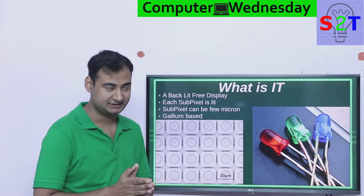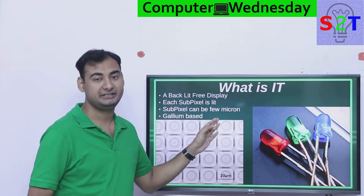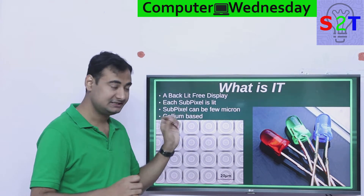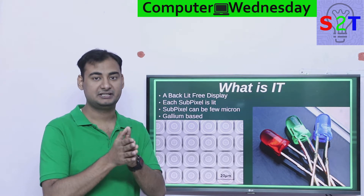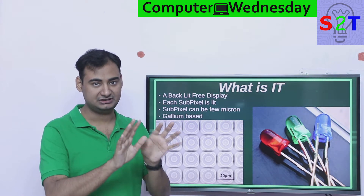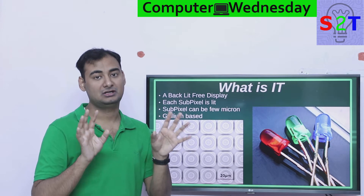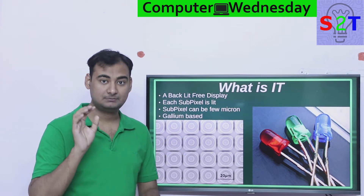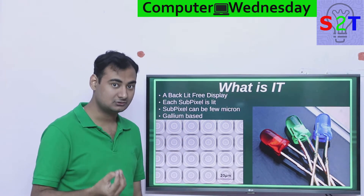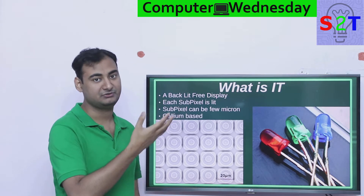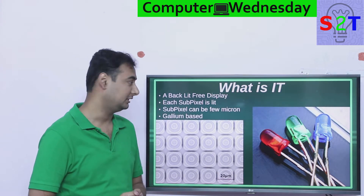First we have to understand what it is. In simplest terms, it is a backlit-free display technology. Basically, a pixel is divided into three core categories — RGB — each of them is called a sub-pixel. In this scenario, the sub-pixel itself will illuminate light, and that is the core difference between LCD and micro LED.